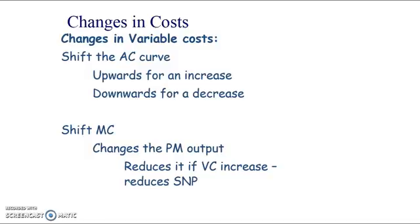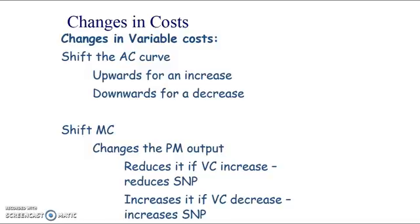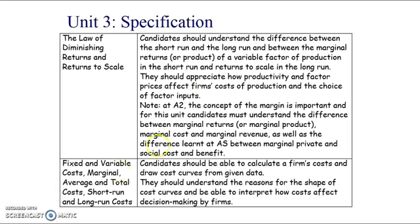If variable costs decrease, the profit-maximising output actually increases, and this increases the supernormal profit box by increasing its length. That covers the key points for this presentation on fixed, variable, average, and marginal costs.